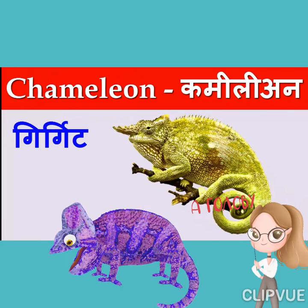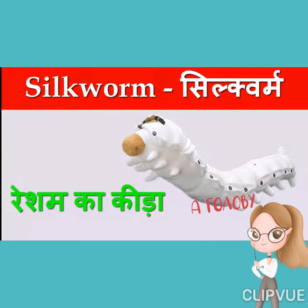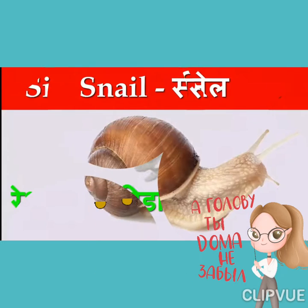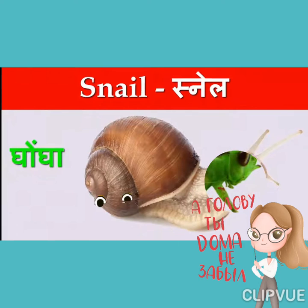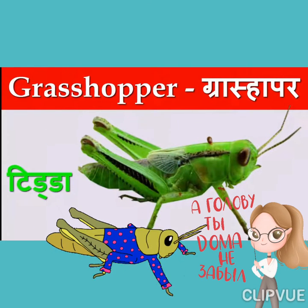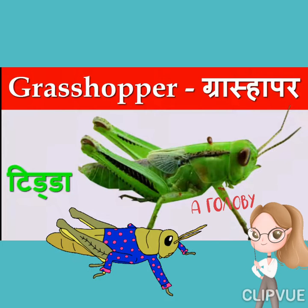Chameleon. Chameleon means girgit. S-I-L-K W-O-R-M, silk worm. Silk worm means resham ka kira. S-N-A-I-L, snail. Snail means ghonga. G-R-A-S-S-H-O-P-P-E-R, grasshopper. Grasshopper means tidda.